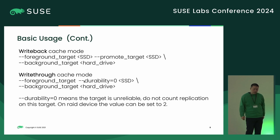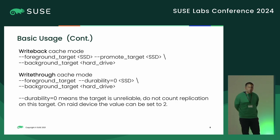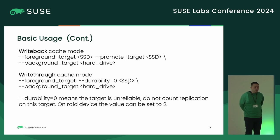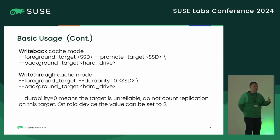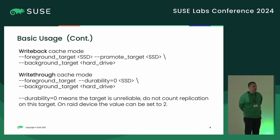For write-through mode, we use another option called 'durability'. Durability means the durability capability of a target device. If we set durability to zero, that means 'I don't trust this device — it has no durability, do not count replication on this device.' So after data moves to the background target, the copy on the foreground target with durability zero can be discarded at any time — that makes it effectively write-through. There is no read-through cache, just write-through.